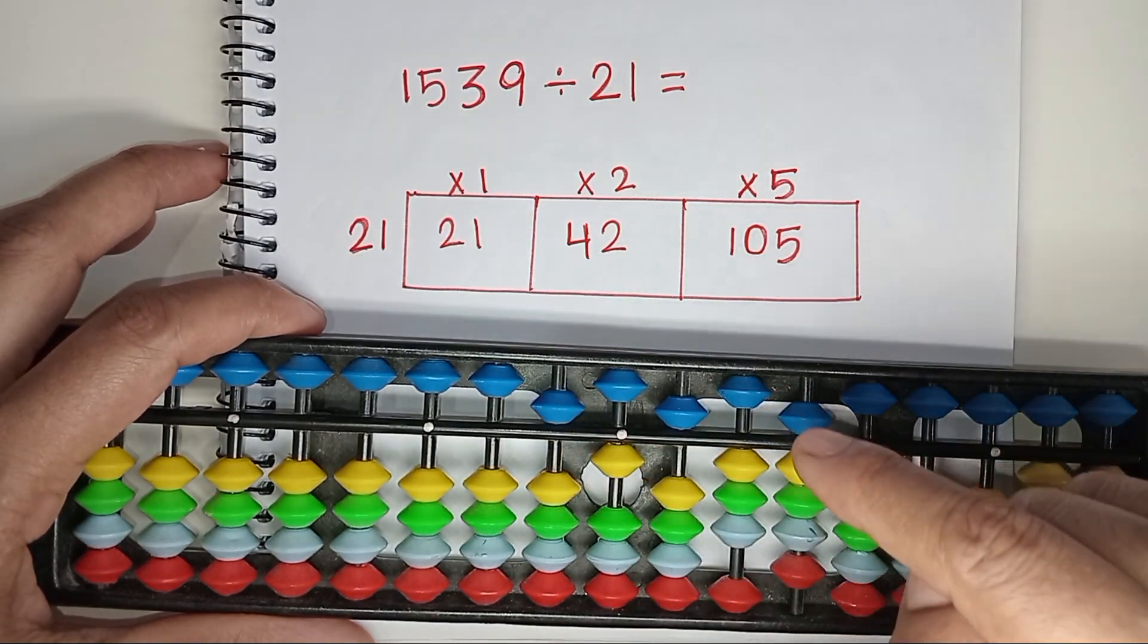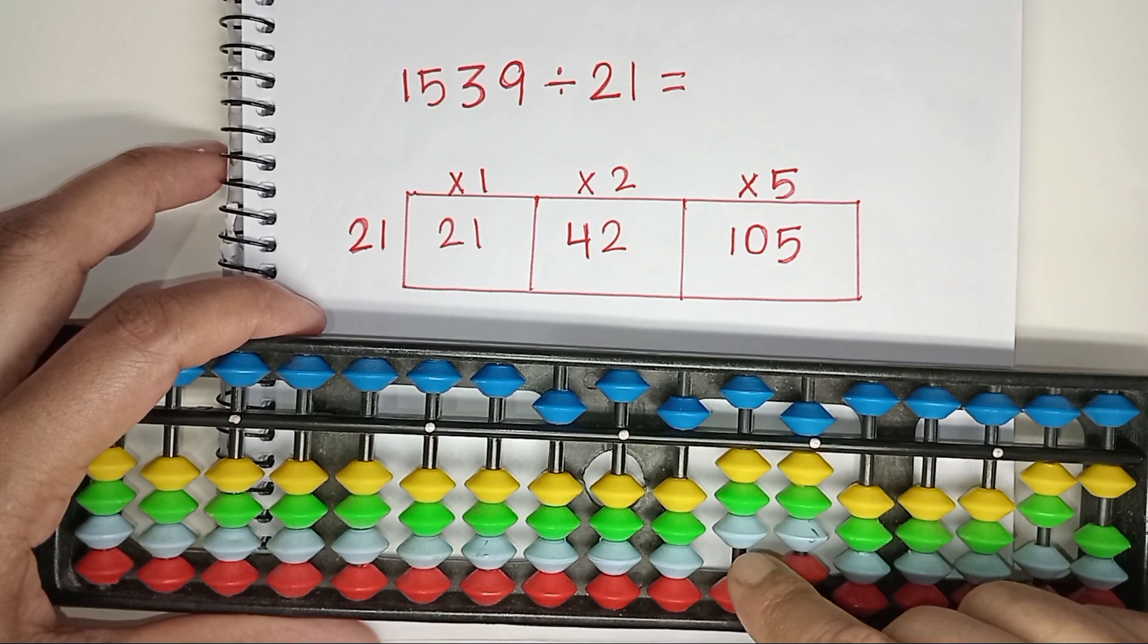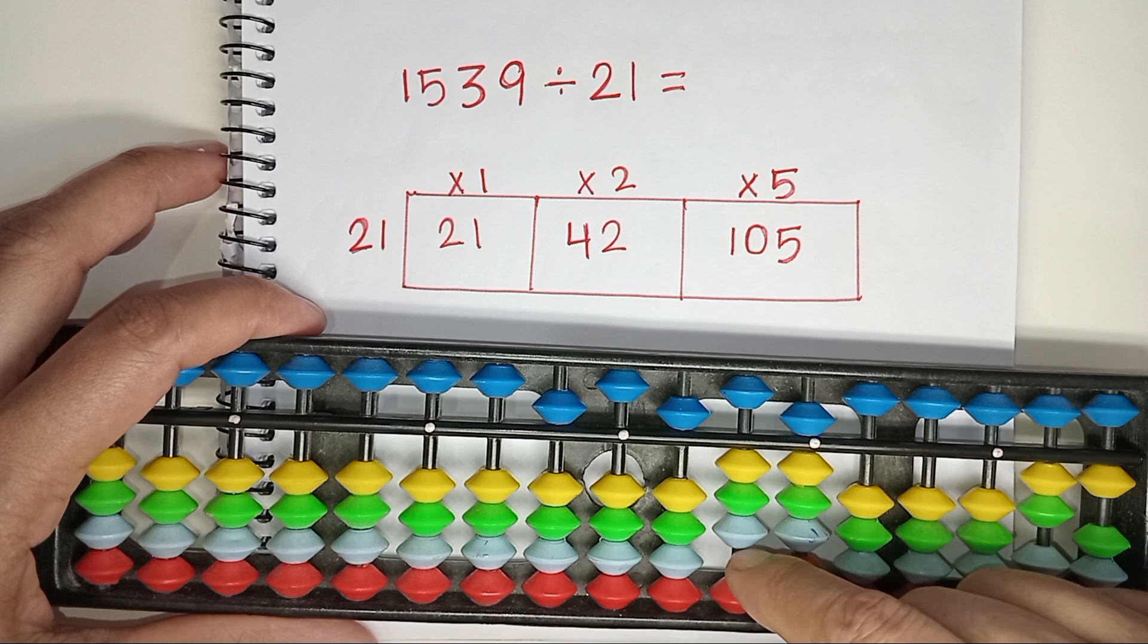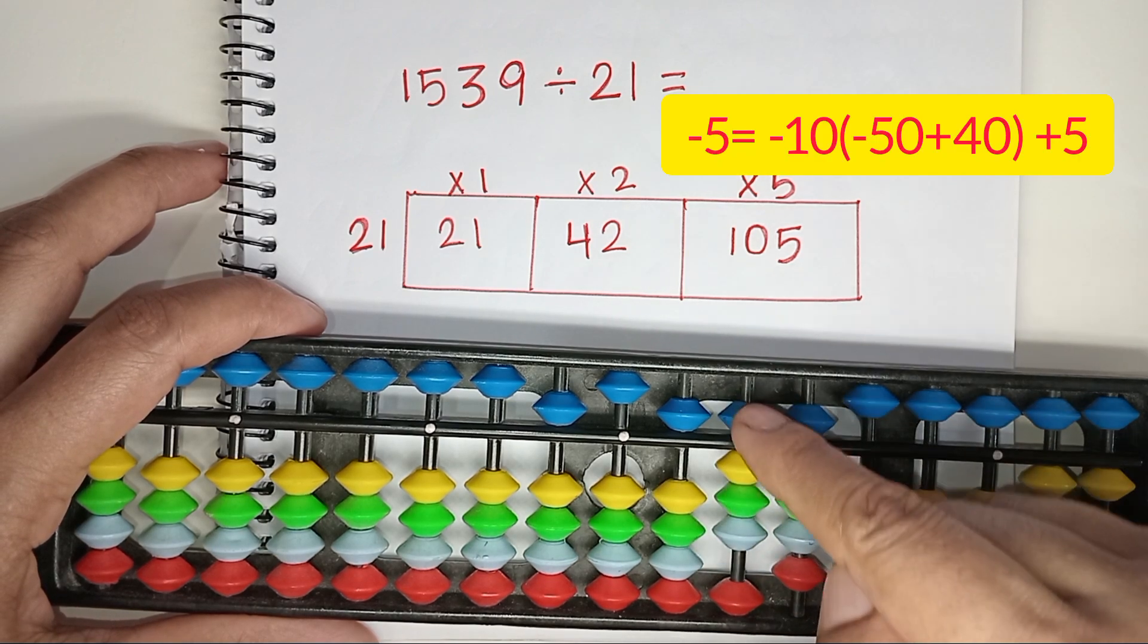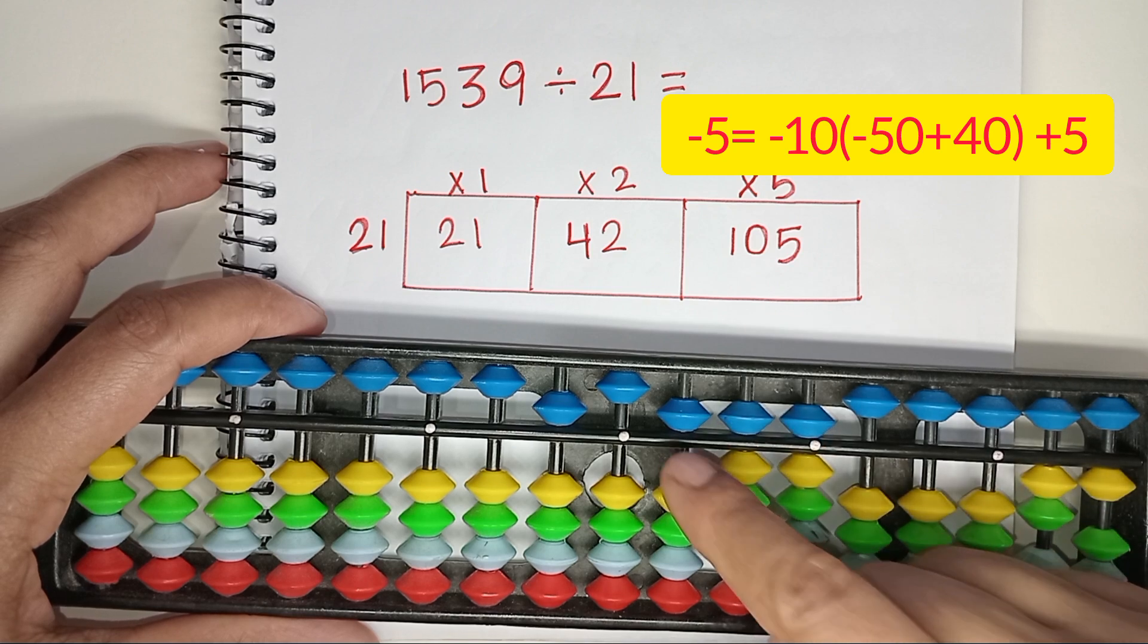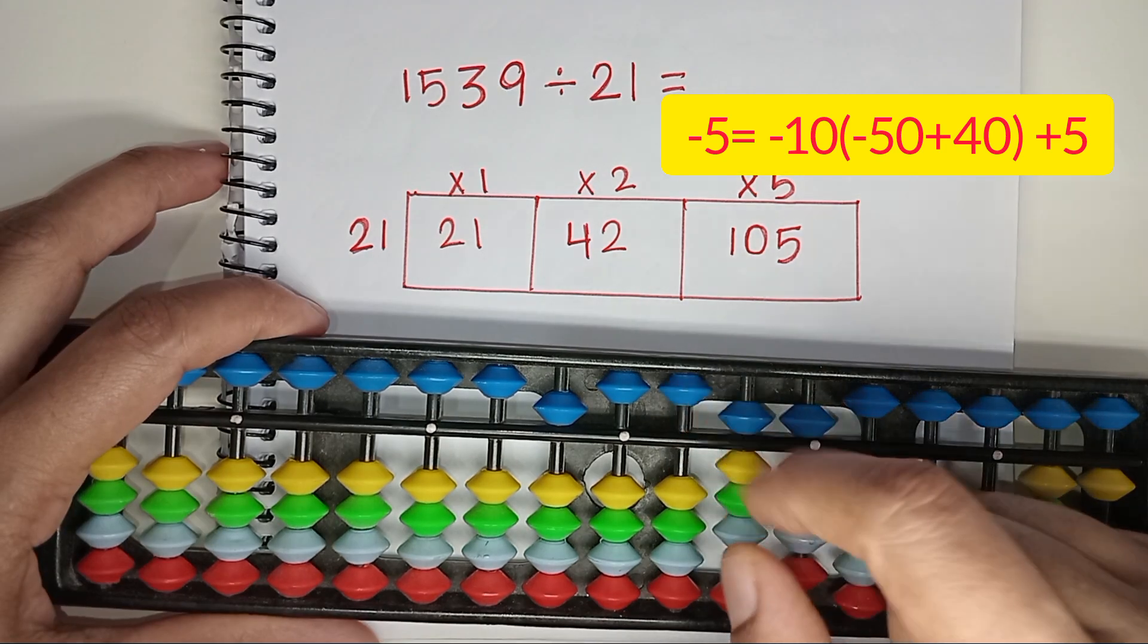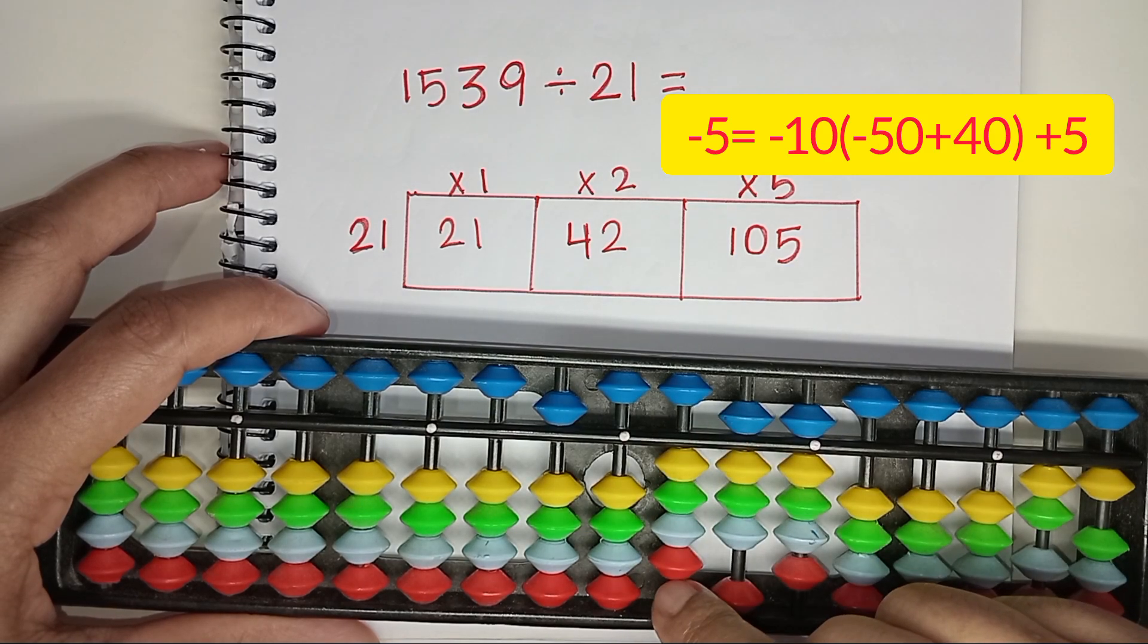21 times 5 is 105. Less 100, less 0, and less 5. It's not possible to less 5 from that rod. That's why we need to apply the rules. Less a 10, add a 5. We can add a 5, but we cannot less a 10. To less a 10, we need to apply a different formula: less a 5, add a 4. That means we less 50 and add 40 to less 10.